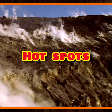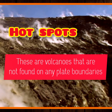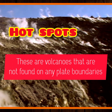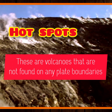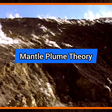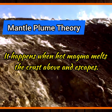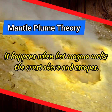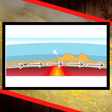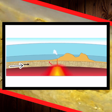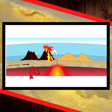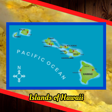Hot Spots: These are volcanoes that are not found on plate boundaries. The most common explanation is the mantle plume theory. This is when hot magma melts through and escapes. Because tectonic plates are constantly moving but mantle plumes stay stationary, they normally create a chain of volcanoes — for example, the islands of Hawaii.